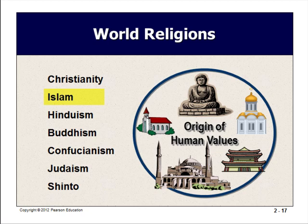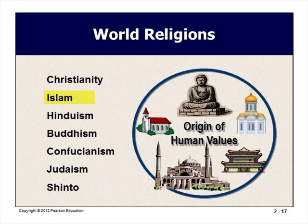Islam was founded by Muhammad in 600 AD in Mecca, Saudi Arabia, the holy city of Islam. It is the world's second largest religion with 1.3 billion adherents. The word Islam means submission to Allah, and Muslim means one who submits to Allah. Religion strongly affects the goods and services acceptable to Muslim consumers — for example, alcohol, pork, and interest on money.